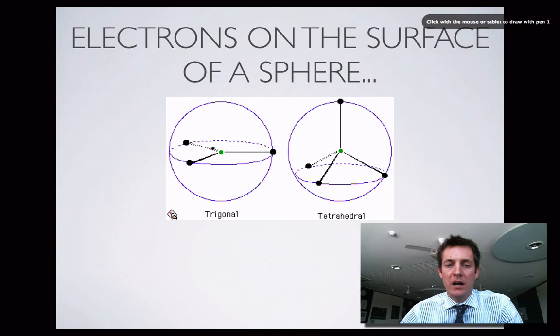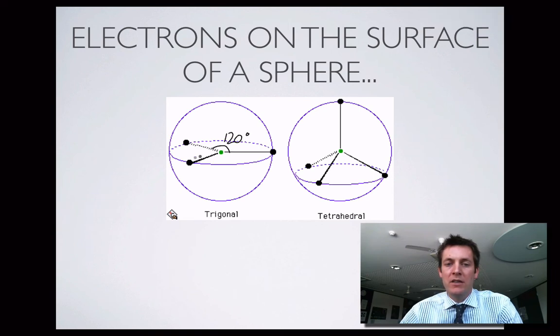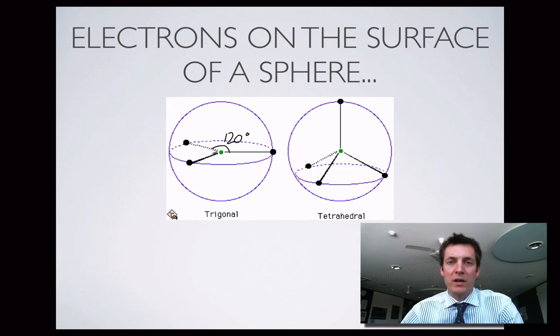They're 120 degrees apart, or in other words, I suppose you could say that they're found on the equator of a sphere. If this was a planet, they'd be on the equator, 120 degrees apart from one another. So if we've got three pairs, they'll get as far apart from one another as they can because they're repelling one another by adopting those positions.